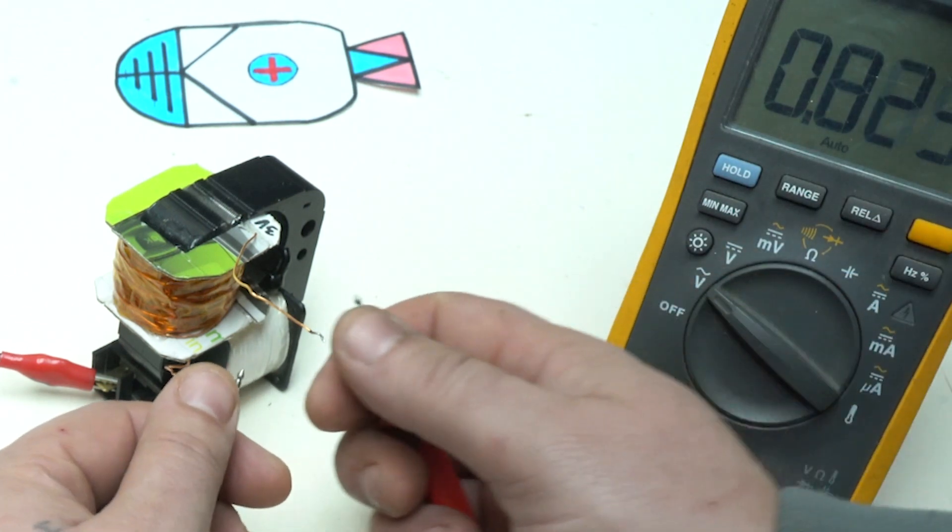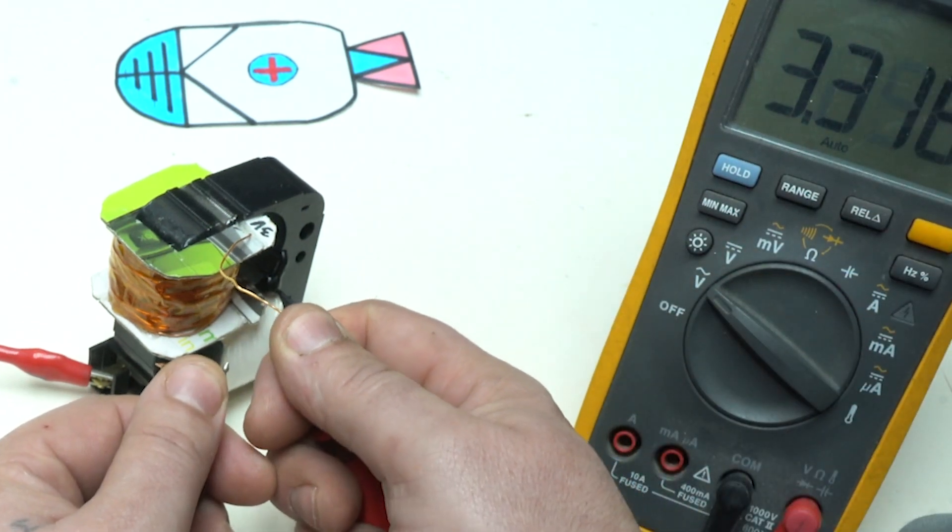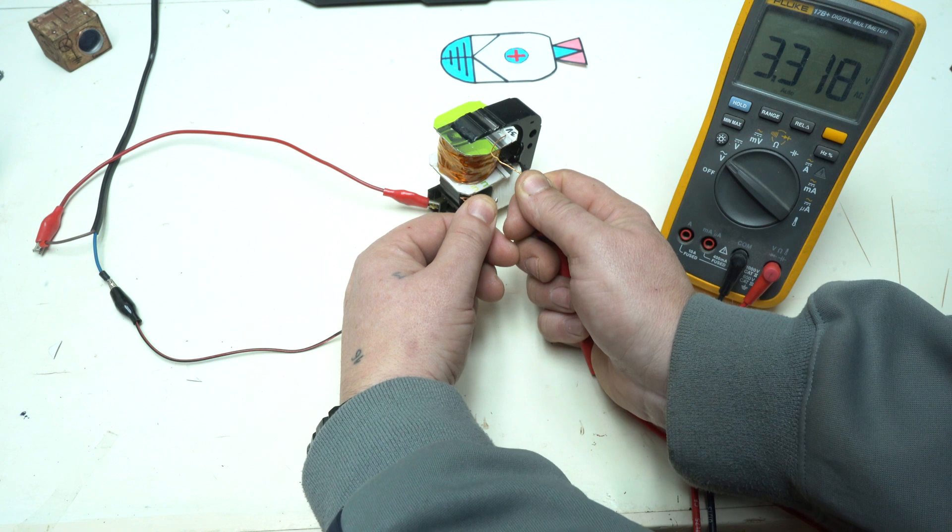Let's check the secondary coil, how much voltage it is giving. AC volts, 3.3 volts.